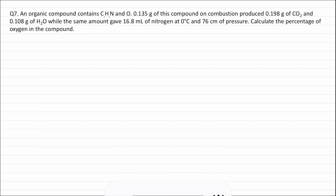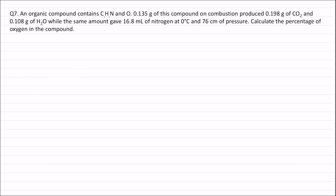Question 7: An organic compound contains carbon, hydrogen, nitrogen, and oxygen. 0.135 gram of this compound on combustion produced 0.198 gram of carbon dioxide and 0.108 gram of H₂O, while the same amount gave 16.8 mL of nitrogen at 0°C and 76 cm of pressure. Calculate the percentage of oxygen in the compound.